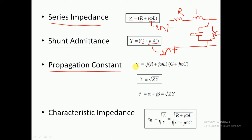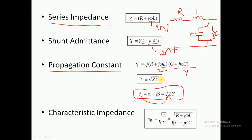Propagation constant is denoted gamma. So gamma = √(Z × Y). Since Z = R + jωL and Y = G + jωC, the propagation constant gamma = √[(R + jωL)(G + jωC)]. This is equivalent to α + jβ, where α is called the attenuation constant and β is the phase constant.